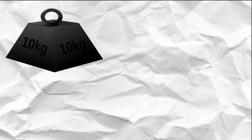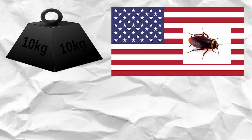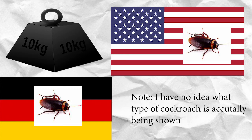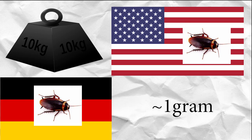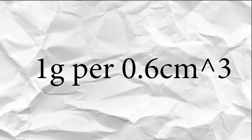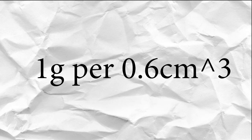Now we need one more measurement from the cockroach to be able to compare it to Tsar Bomba, the mass. I couldn't find an average mass of an American cockroach, however, based on the numbers of the German cockroach, we're going to assume that it's about 1 gram. Combined, that gives us 1 gram for 0.6 centimeters cubed, a number that we can work with.